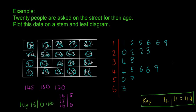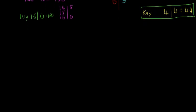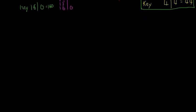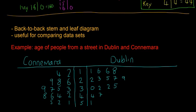We're going to look at one more type of stem and leaf diagram, which is a back-to-back stem and leaf diagram. Here I've done a quick example. The back-to-back stem and leaf diagram is useful for comparing data sets—that's what it's used for.